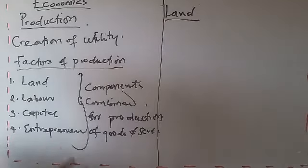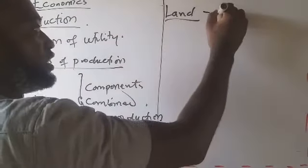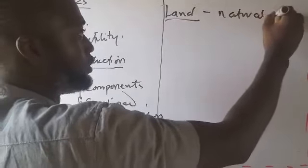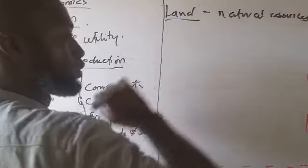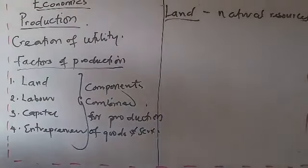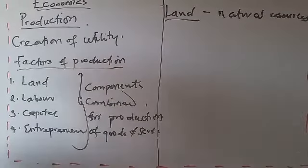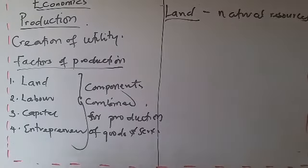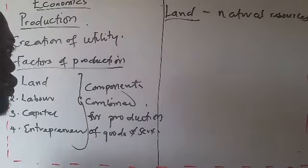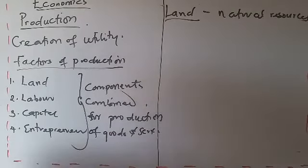All these natural resources are what we look at as land in economics. Talking about land, we talk about natural resources. Not only the uppermost layer of the earth surface as layman we actually define it, but land is the uppermost layer of the earth surface which includes all the resources in the land, in the sea, in the mountain, in the forest and so on and so forth. That is what we call or we refer to as land in economics.